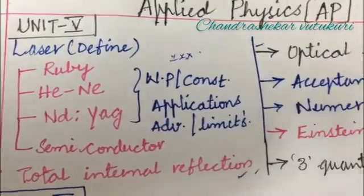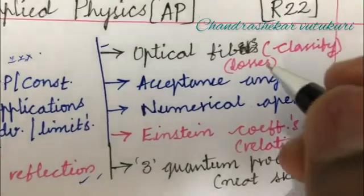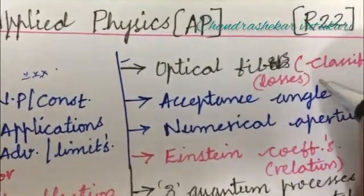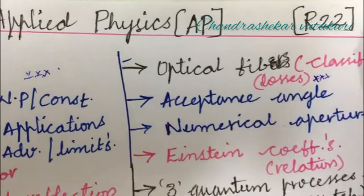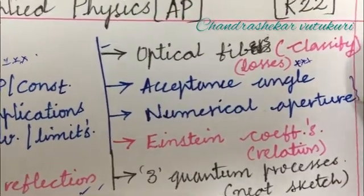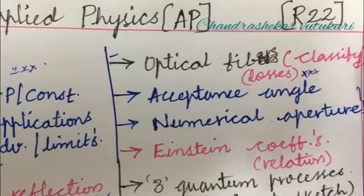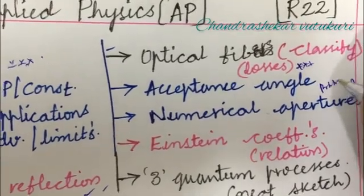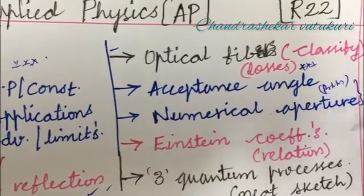Later, the optical fiber and the classification and the losses of optical fiber may be a short question this time. Acceptance angle and numerical aperture may be short as well as long questions, along with the problem related to this concept, which is one of the damn sure questions.